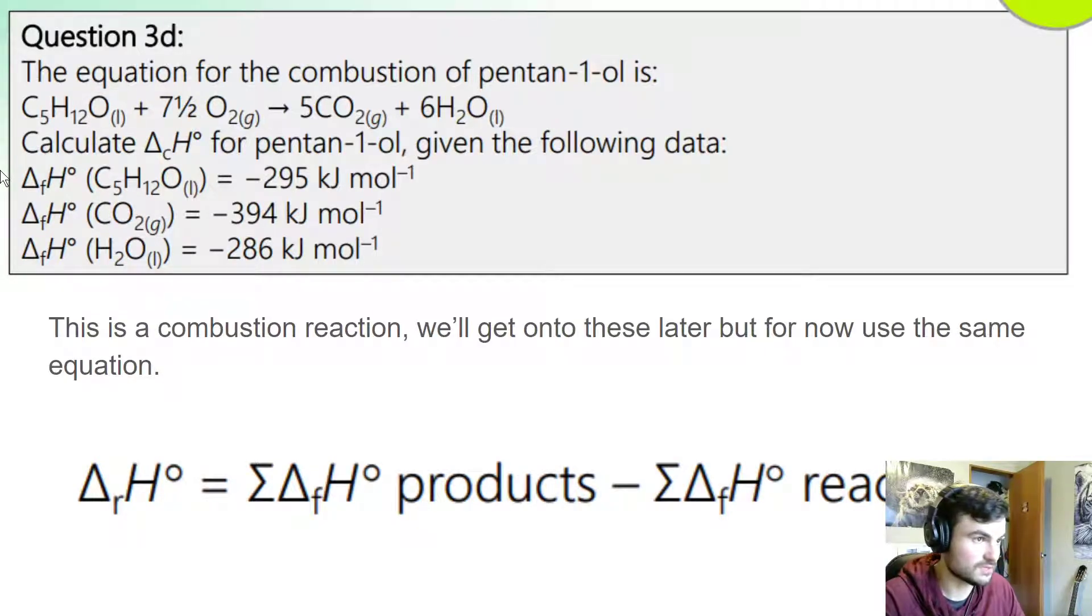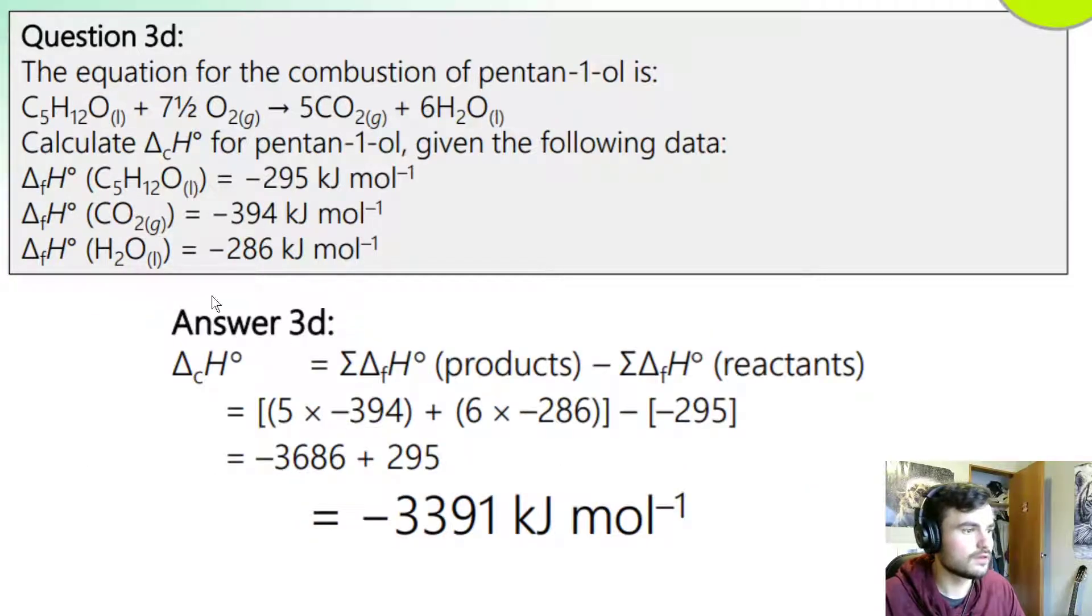Let's get into the math here. Products minus reactants. Our products are CO2 and H2O. We've got 5, notice the 5 here, 5 times the value for CO2 plus, because we're summing it, plus 6 times the value for H2O. We have to do this carefully on our calculators getting the positives and the negatives correctly.